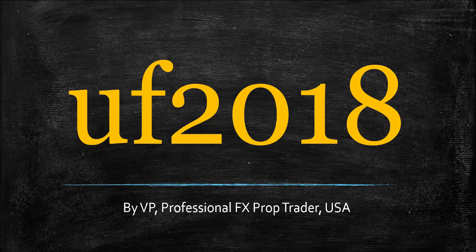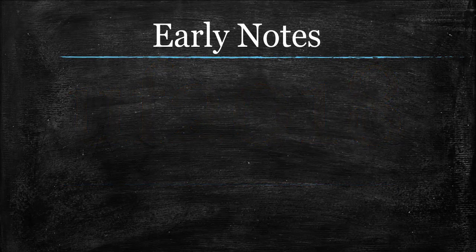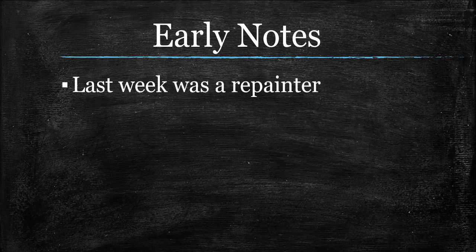It was an indicator that was developed well before 2018, just to add to the confusion. Now before we start, a couple of notes. Last week, if you were not aware, we showed a repainting indicator — the Alaskan Pip Assassin. We did not show a repainter on purpose; we didn't know, and you guys in the comments section were very quick to pick up on it.